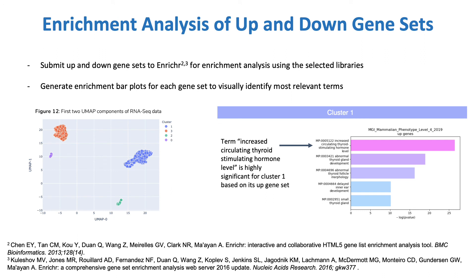I use the up and down gene sets for each cluster to query Enrichr, a web-based tool developed by the lab for enrichment analysis using a variety of libraries. This generates a table of significant terms and their associated p-values for each set, which I convert into bar plots like the one shown here to visualize the most relevant terms per set per library. I also display the UMAP component scatterplot again, this time color-coding points by clusters for reference against the enrichment plots.